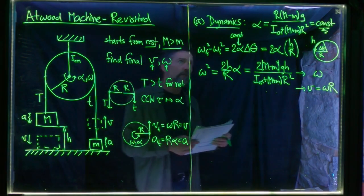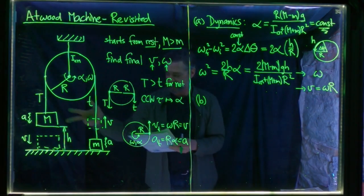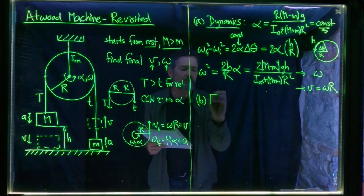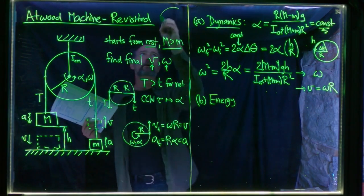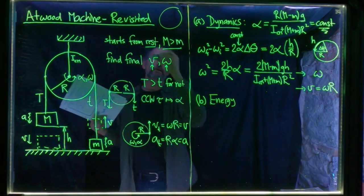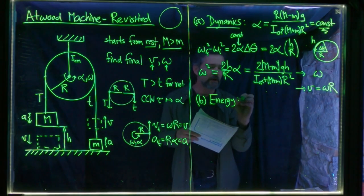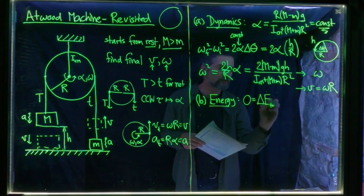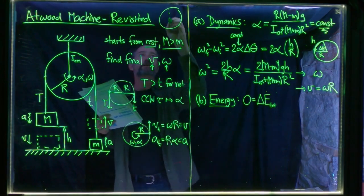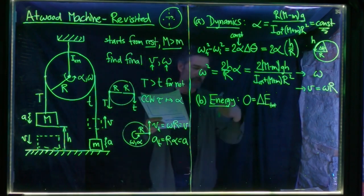However, if we apply conservation of energy, it's much easier to get this same answer. We can think of conservation of energy from two different points of view. We can take the whole system and say if no energy goes in or out, the total energy doesn't change: delta E total equals zero. Or we can divide the system up and look at gravitational energy, kinetic energy, and energy transfers, which is work.